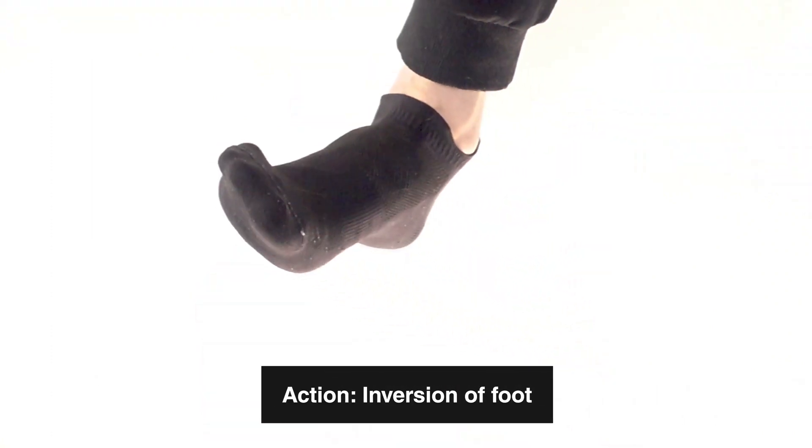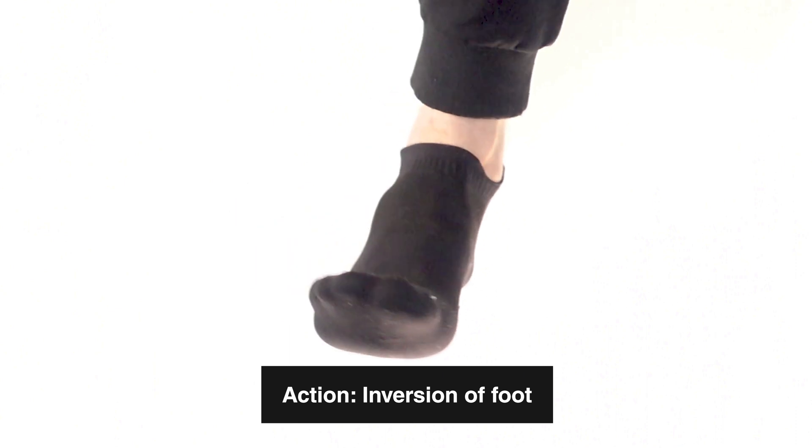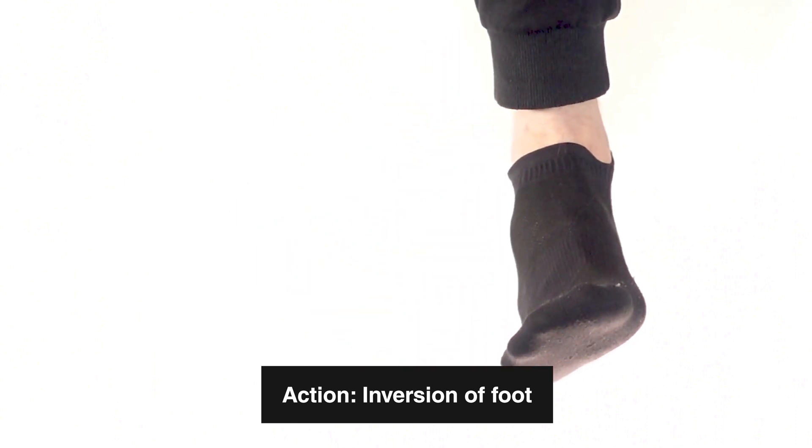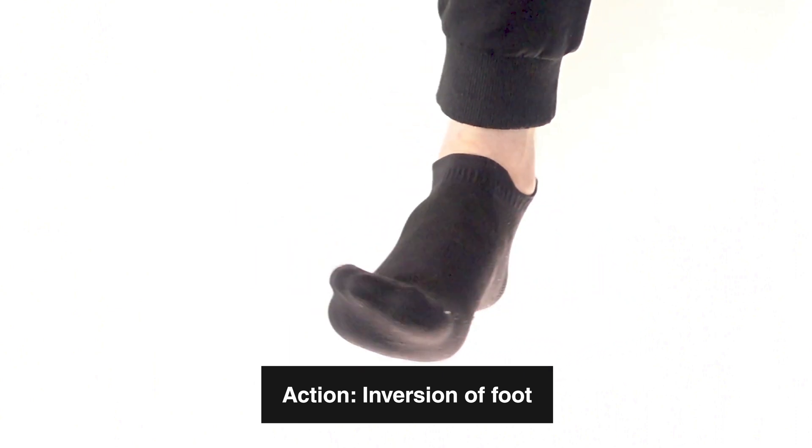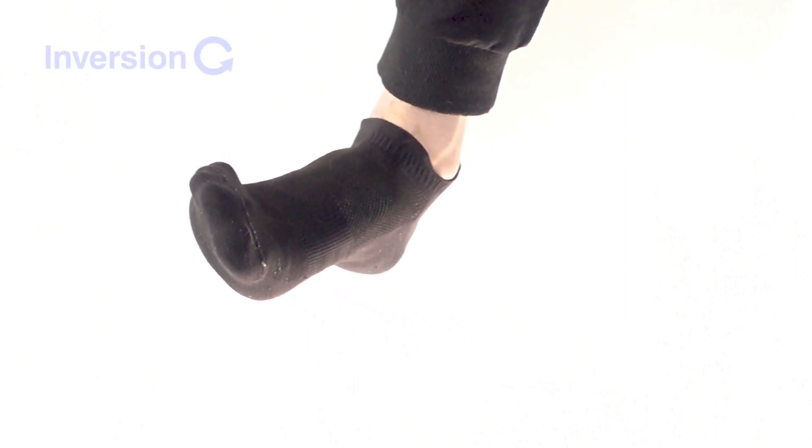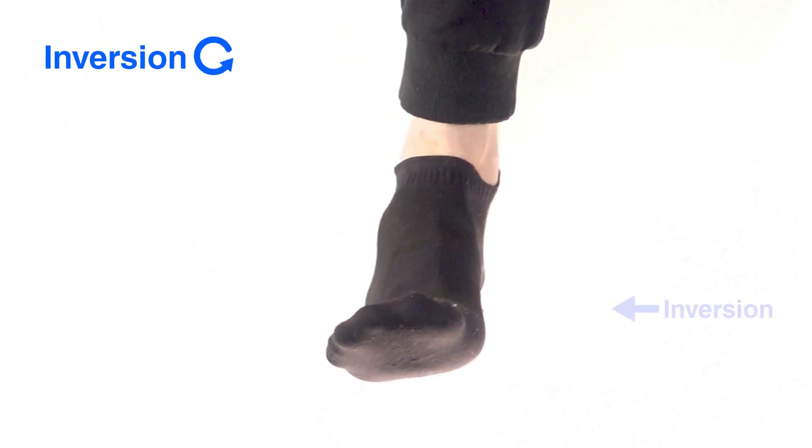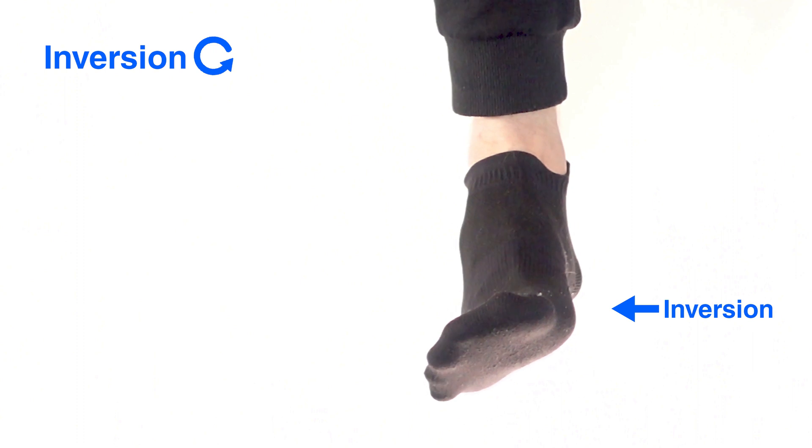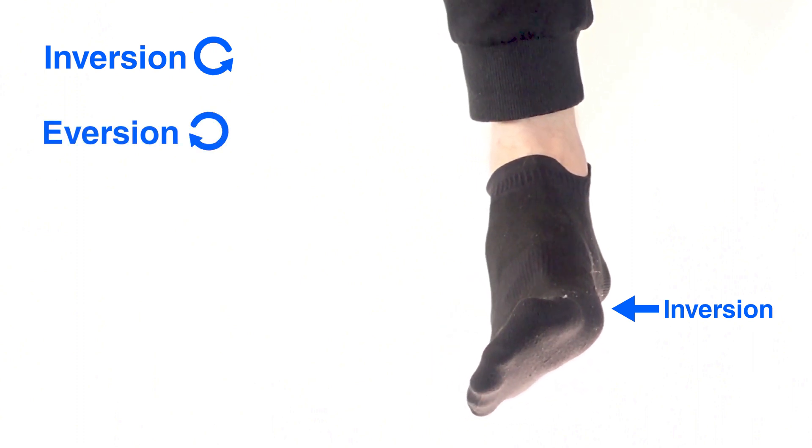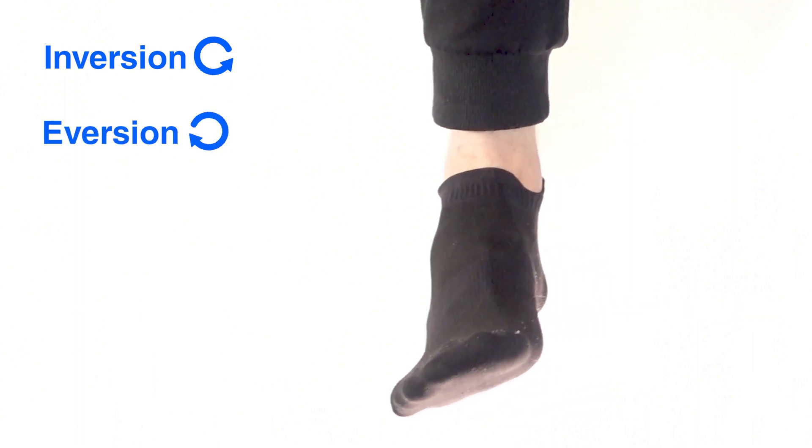So here we can see a demonstration of our next action and that's going to be inversion of the foot. So inversion is when the foot tilts so that the sole of the foot goes towards the medial side of the body, and the opposite of that would be eversion. And eversion is when the foot tilts away from the midline of the body.